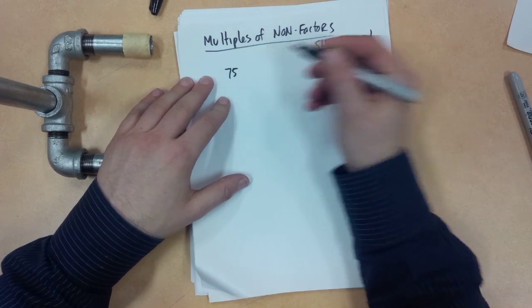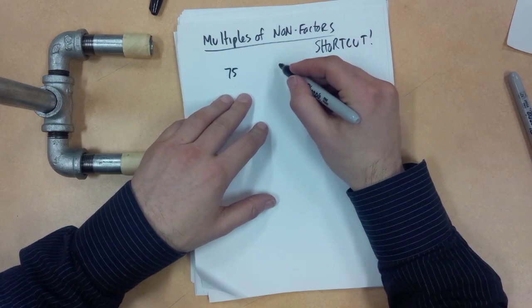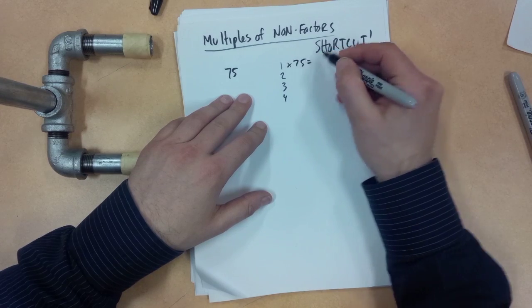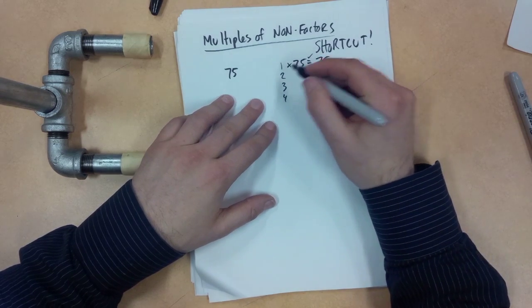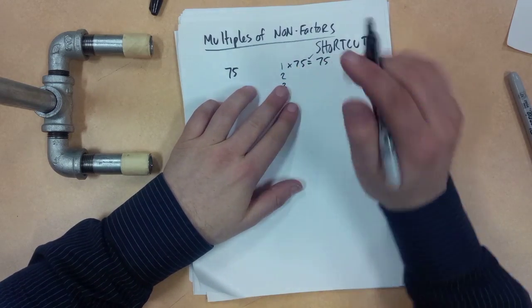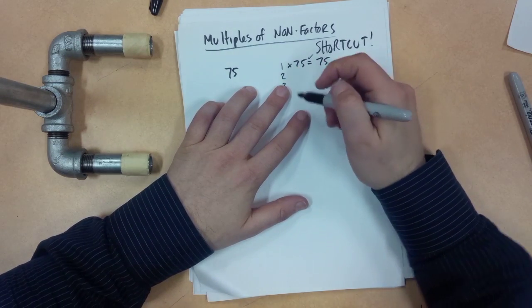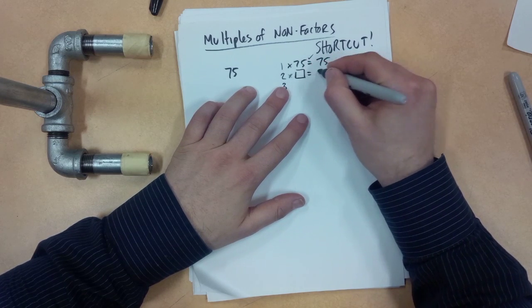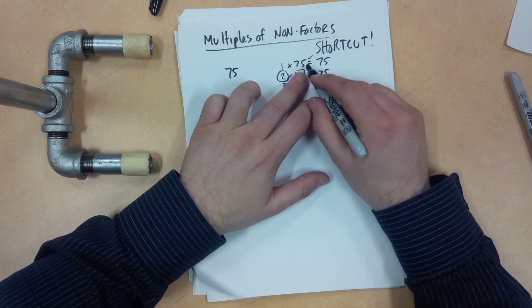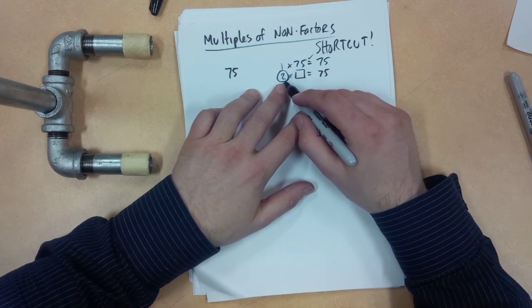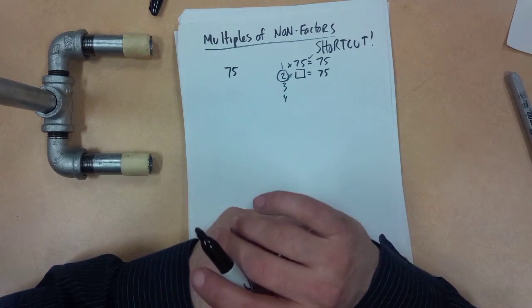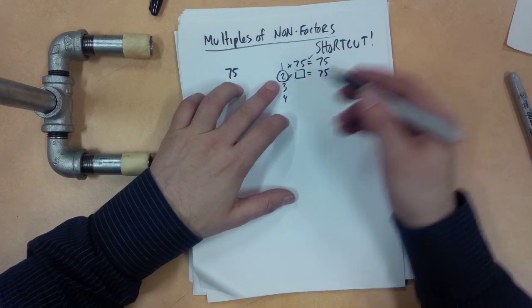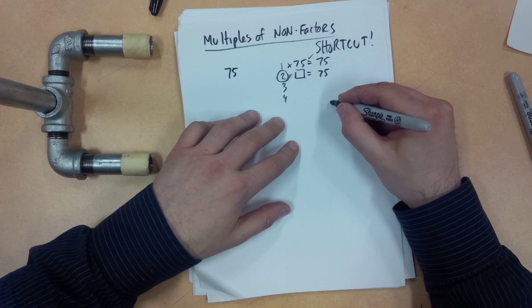So imagine we had the number 75 and we need to find all the factors of 75. So instead of making a list 1, 2, 3, 4, and just trying to complete this list, what we can do is just assess these one at a time and find out where it doesn't work. Because where it doesn't work is very valuable. For example, we know that there's nothing that fits in here to get 75. So we know that 2, and the reason for that is because 75 is not an even number. So that means that 2 times nothing will give us 75, or there's no multiple of 2 that gives us 75. And that means that because 2 is out, every multiple of 2 is also out of the picture.